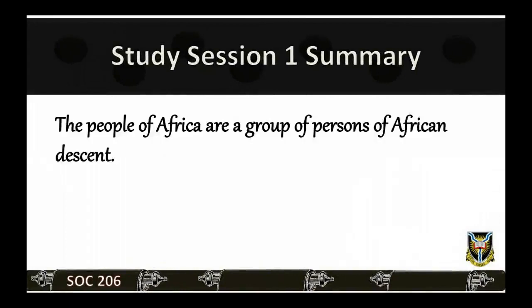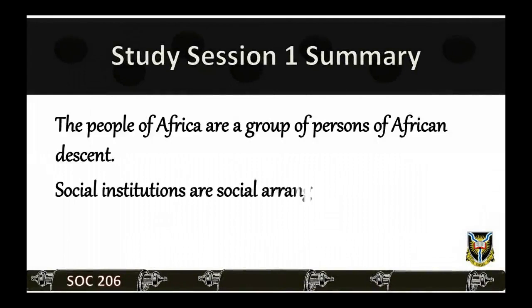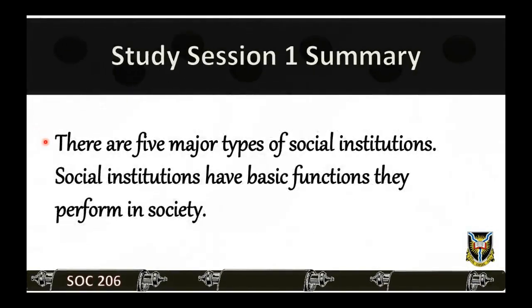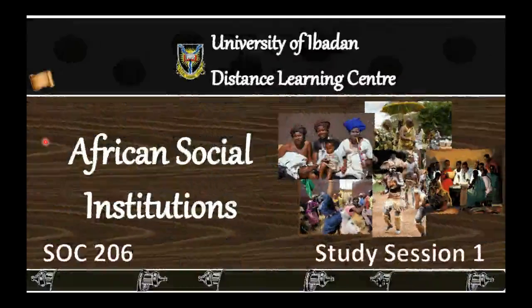Summary of Study Session 1. In Study Session 1, you have learned that: 1. The people of Africa are a group of persons of African descent. 2. Social institutions are social arrangements that channel behavior in prescribed ways in important areas of social life. 3. There are 5 major types of social institutions. 4. Social institutions have basic functions they perform in society. That ends Study Session 1. Thank you for listening.